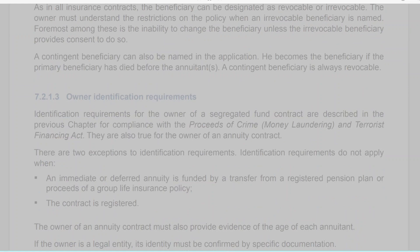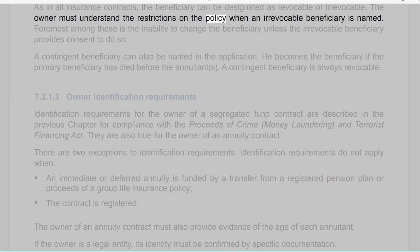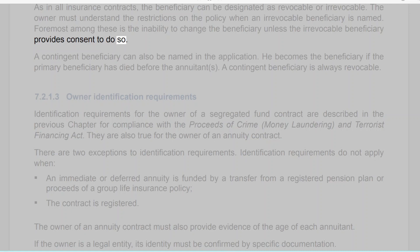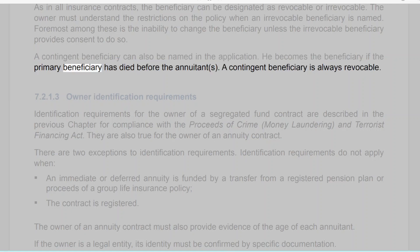As in all insurance contracts, the beneficiary can be designated as revocable or irrevocable. The owner must understand the restrictions on the policy when an irrevocable beneficiary is named — foremost among these is the inability to change the beneficiary unless the irrevocable beneficiary provides consent. A contingent beneficiary can also be named in the application; he becomes the beneficiary if the primary beneficiary has died before the annuitants. A contingent beneficiary is always revocable.